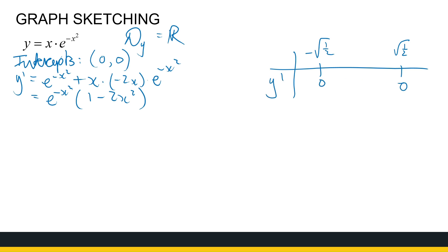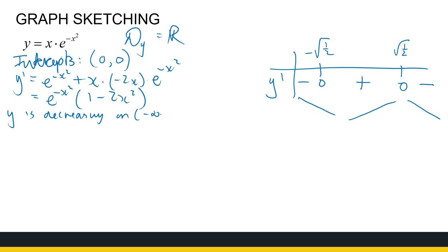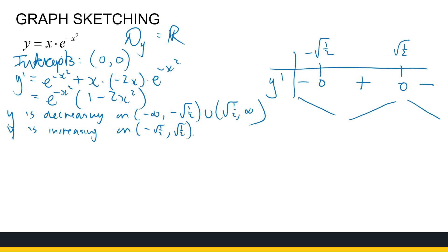Now, e to the power minus x squared is always positive, so it doesn't really influence the sign of the derivative. Substituting 0 between the two critical values, the derivative is positive there, negative before minus root of a half, and negative after root of a half. So this function is decreasing, then increasing, then decreasing again. y is decreasing on minus infinity to minus root of a half, and from root of a half to infinity. y is increasing on minus root of a half to root of a half.